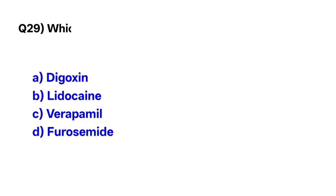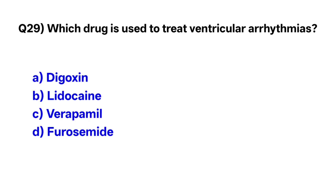Question number twenty-nine: Which drug is used to treat ventricular arrhythmias? The correct option is B, lidocaine.